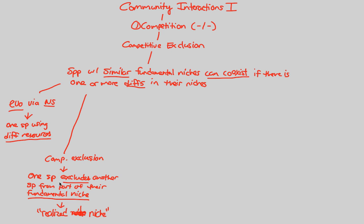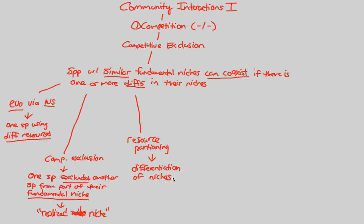That's why we observe realized niches. Another important concept in competitive exclusion is resource partitioning, a big idea in community ecology. It's similar to the trade-offs theme we've seen in population ecology. Resource partitioning refers to the differentiation of niches — it's a technical term for something quite simple: the partitioning, or separation, of niches that is occurring between species.